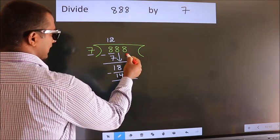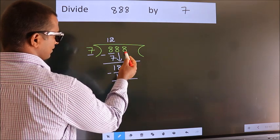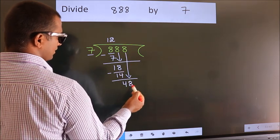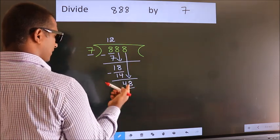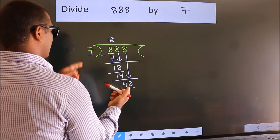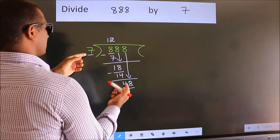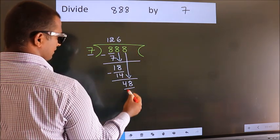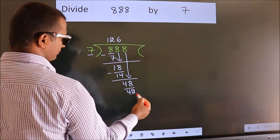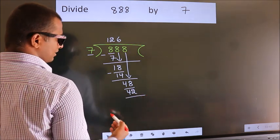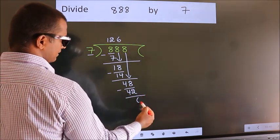After this, bring down the beside number, so 8 down, so 48. A number close to 48 in 7 table is 7 6 42. Now we subtract. We get 6.